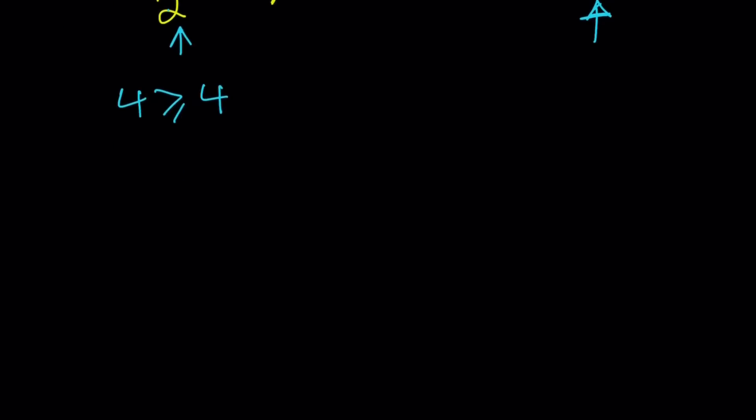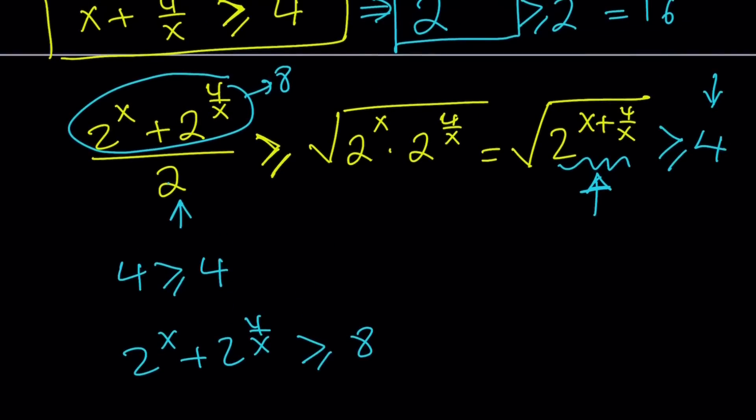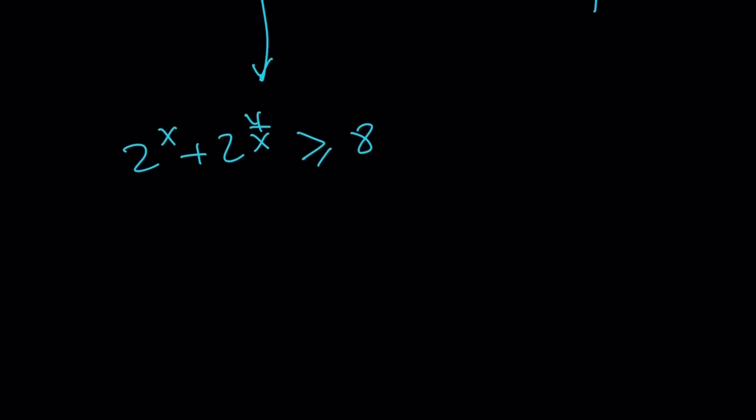In order for this to be true, they all have to be equal. So it means that, let me kind of quickly summarize. We got 2 to the x plus 2 to the 4 over x is greater than or equal to 8. We got this from here. This guy here is greater than or equal to 8 based on this. But we already know it's equal to 8. So when are they equal? When the numbers are equal.